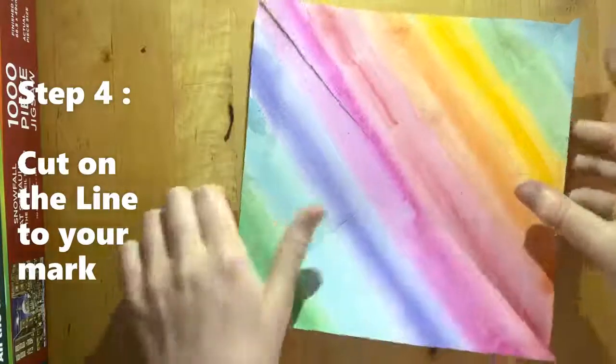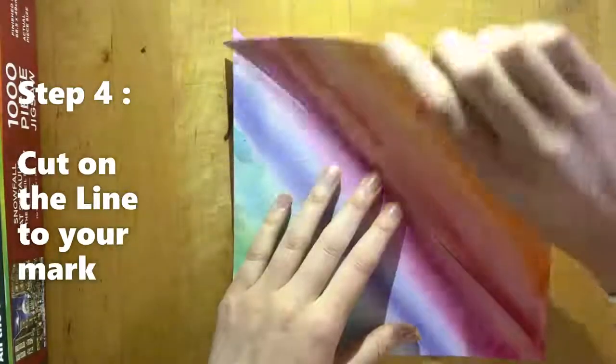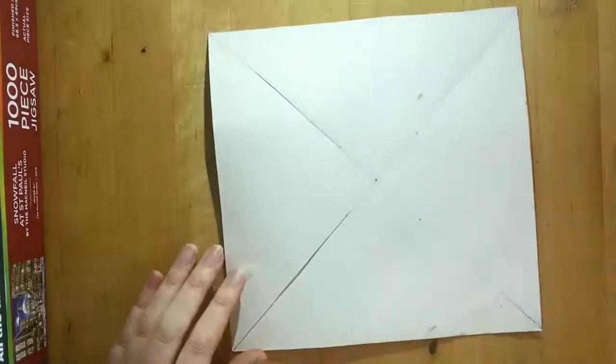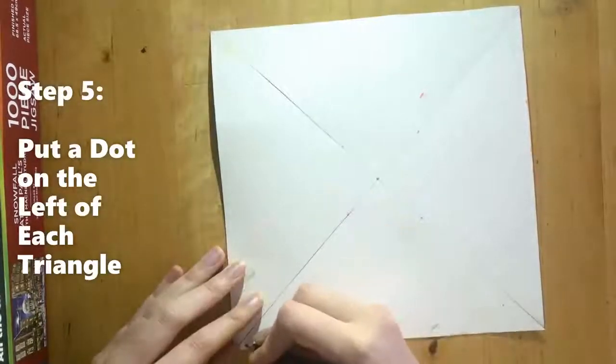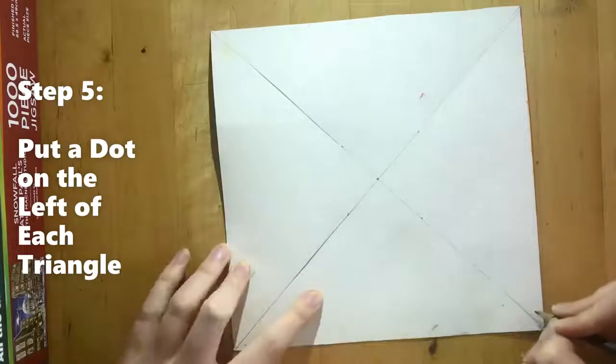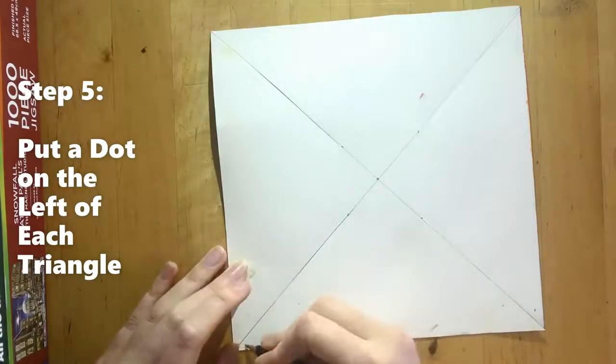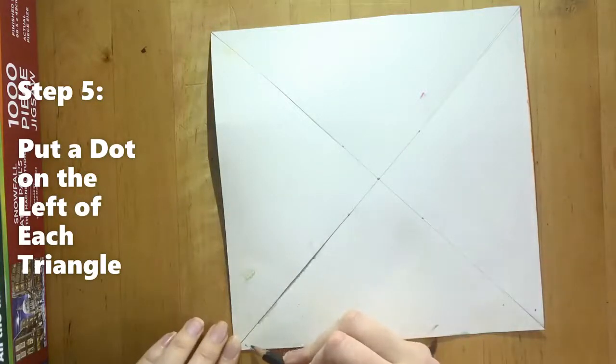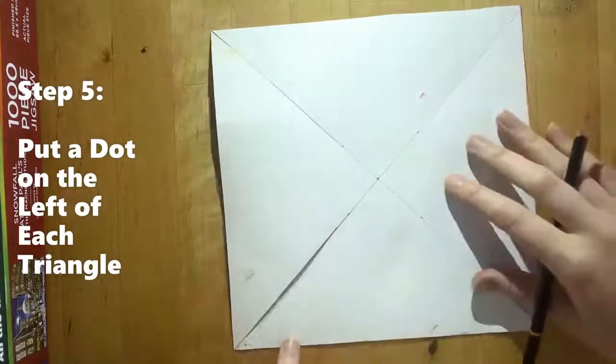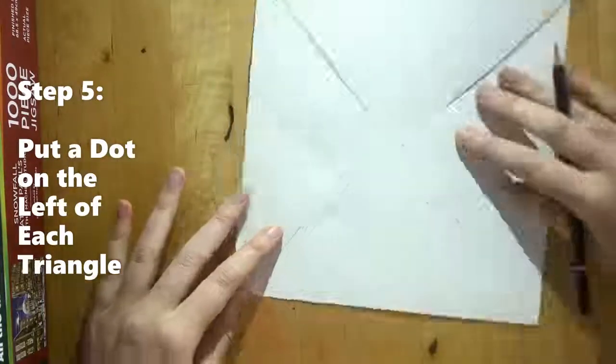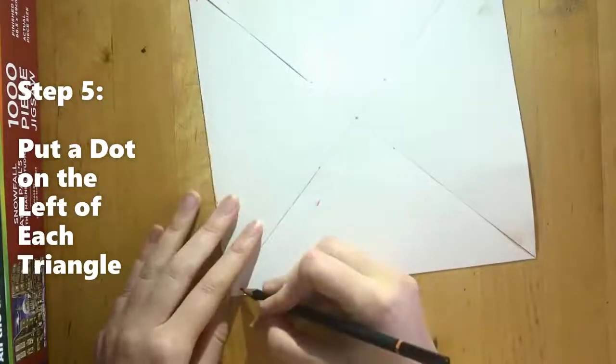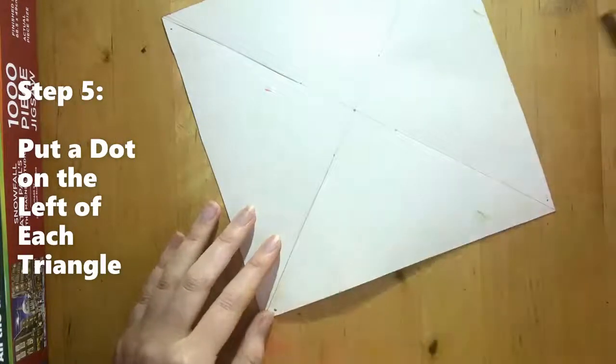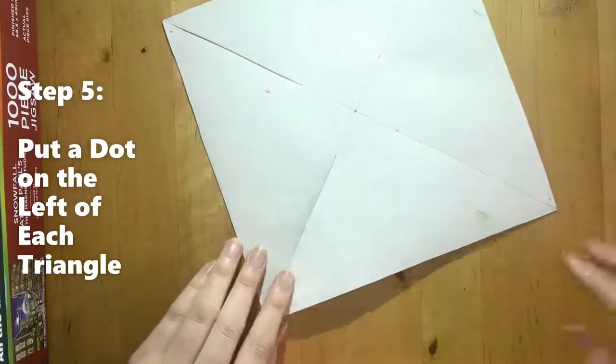Now you should have four loose pieces like this. I'm going to flip it back over. Now I'm going to quickly mark a little dot where I'm going to put my pin through. So you want to do a dot on the left side, this side on each triangle. It's got another dot. There we go.